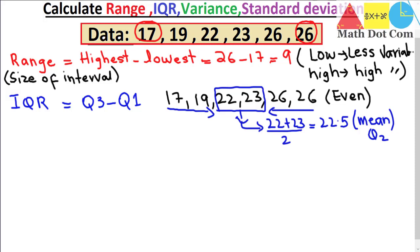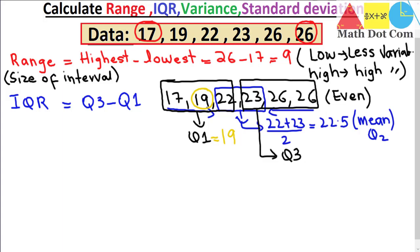For the interquartile range we need Q3 and Q1, so we consider the first part and the second part separately. For Q1, we consider the lower half values and take the center of those three values, which is 19. So Q1 equals 19. For Q3, we consider the upper half three values, and the center of those is 26. So Q3 equals 26. Replacing in the formula: 26 minus 19 equals 7. The value of the interquartile range is 7.